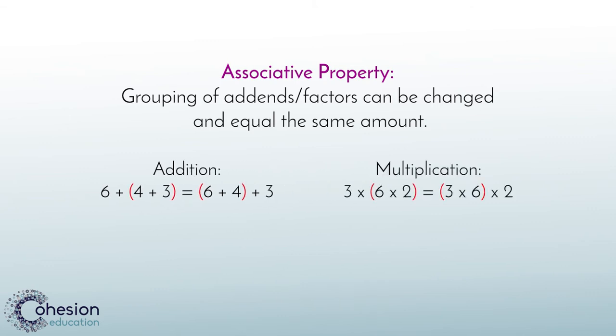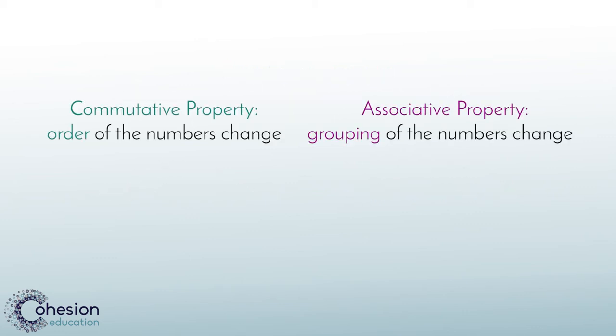This is also applied to the associative property of multiplication. If the numbers being multiplied are grouped differently, the product is still the same. For example, 3 times 6 times 2 equals 3 times 6 times 2. It can be helpful to remember that the commutative property changes the order of the numbers, and the associative property changes the way the numbers are grouped.